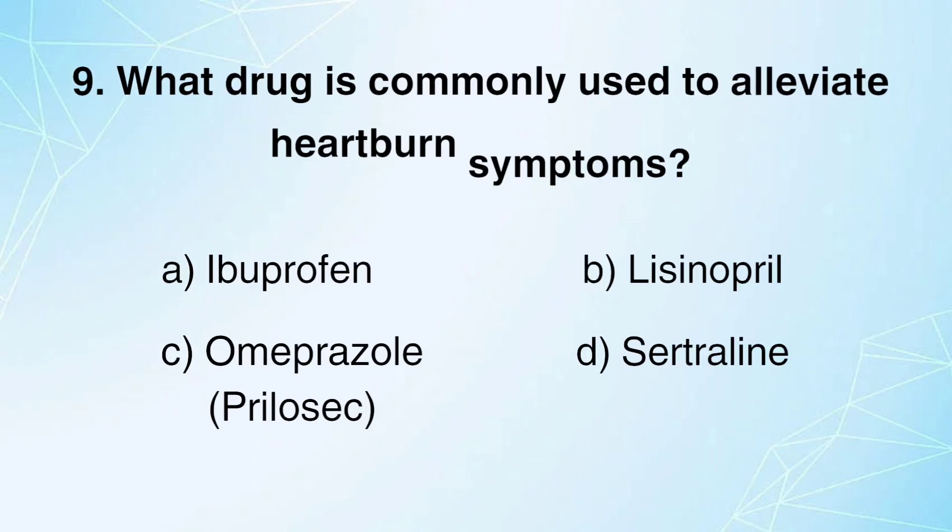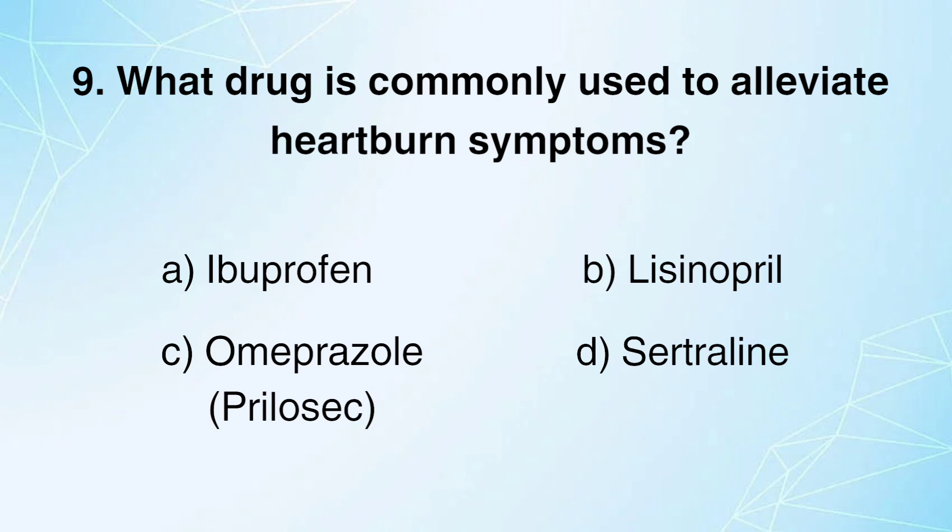What drug is commonly used to alleviate heartburn symptoms? A. Ibuprofen. B. Lisinopril. C. Omeprazole (Prilosec). D. Sertraline. Answer: C.